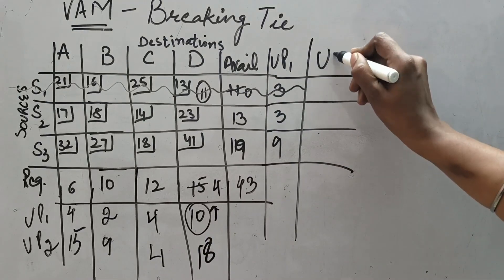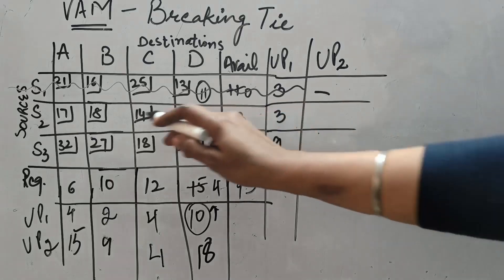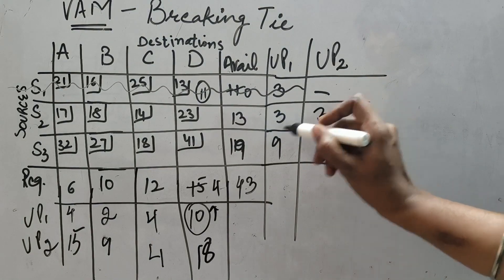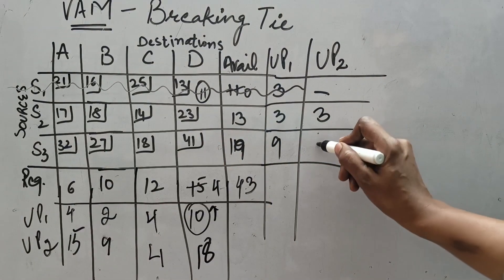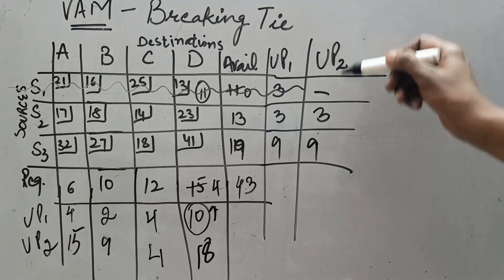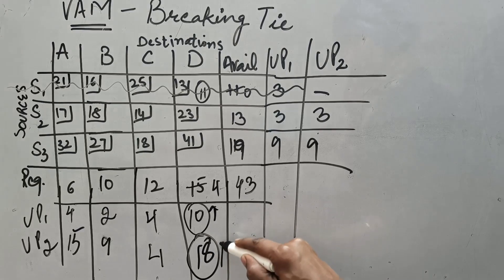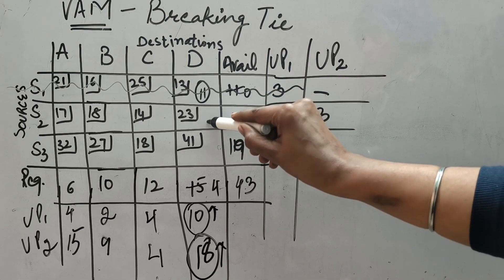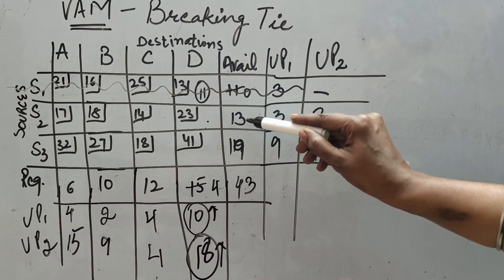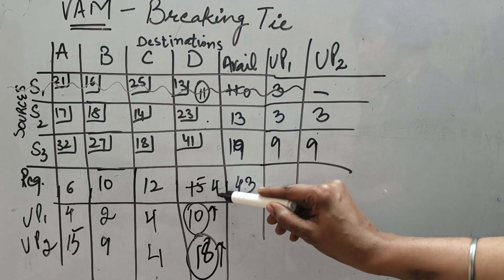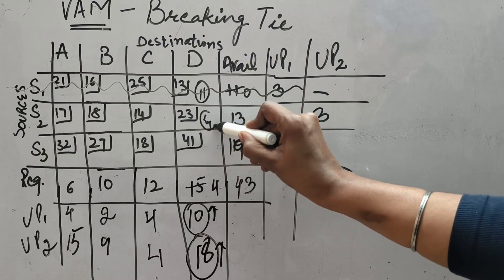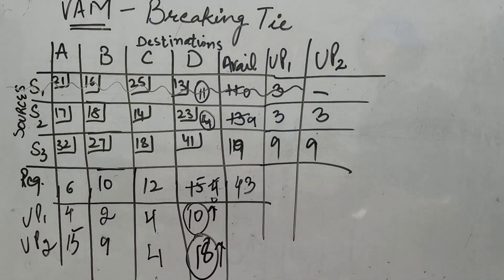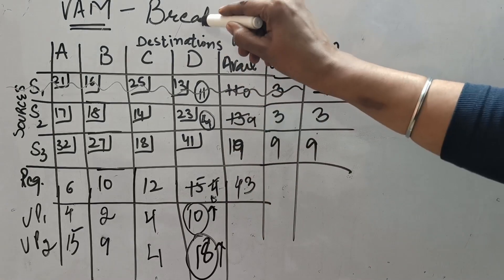We do the same for the column side — unit penalty 2. This row has been deleted. Least is 14 and next least is 17, difference is 3. Here least is 18 and next is 27, difference is 9. Choosing the highest: this 18 is the highest. Going inside this column, minimum is 23. In front of this, availability is 13 and requirement is only 4, so we allot 4. It becomes 0, and this becomes 9. Because it became 0, we delete this column.